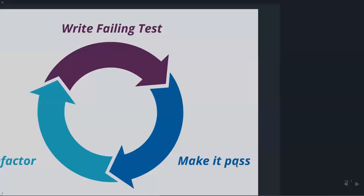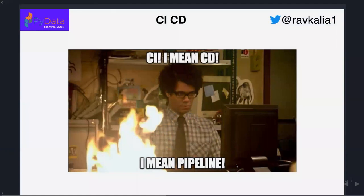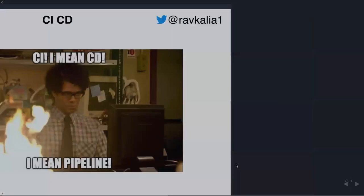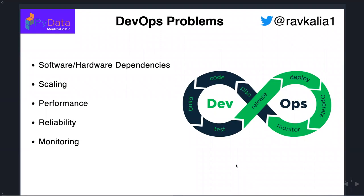CI and CD — continuous integration and continuous deployment. The idea being that by using the right kind of branching strategy, we have a production branch that's always good to go. Pull out into a feature, make the changes necessary, run tests, and then push back into deployment. This is the famous DevOps diagram: first you plan, then you code, then you build, you test, push to release, deploy, operate, monitor, and then come back.